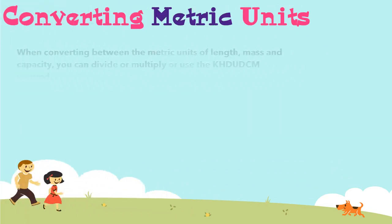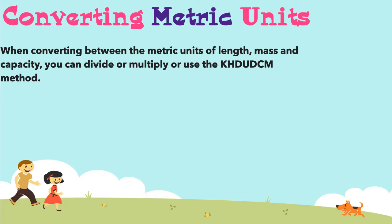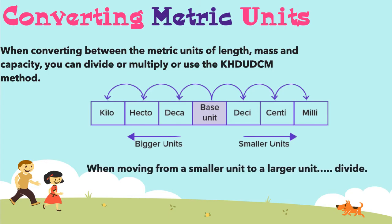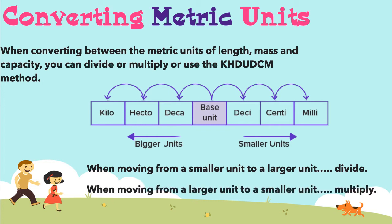When converting between the metric units of length, mass, and capacity, you can divide or multiply, or you can use the KHD UDCM method. When moving from a smaller unit to a larger unit, we must divide. When moving from a larger unit to a smaller unit, we must multiply.